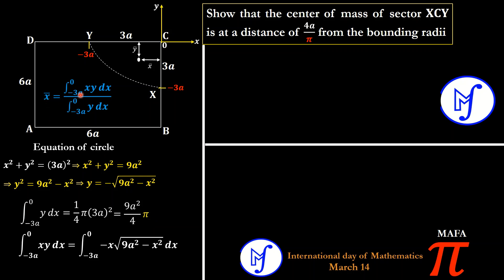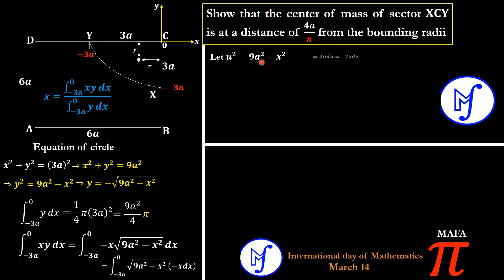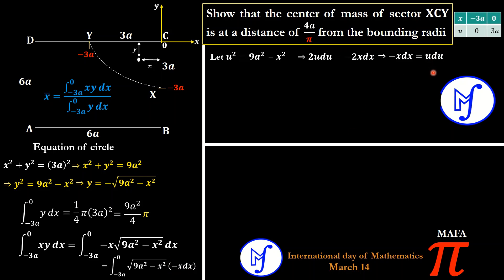Now we find the numerator of x̄: the integral from negative 3a to zero of x·y dx. Substituting y = −√(9a² − x²), we get the integral of −x·√(9a² − x²) dx. To evaluate this, I use a substitution: let u² = 9a² − x², so differentiating both sides gives 2u du = −2x dx, meaning u du = −x dx. This matches the −x dx already in our integral.